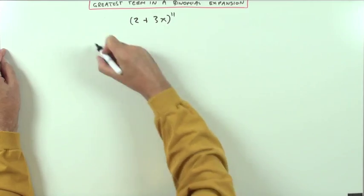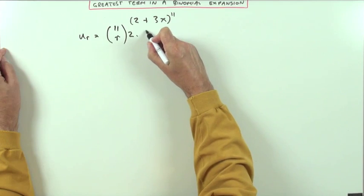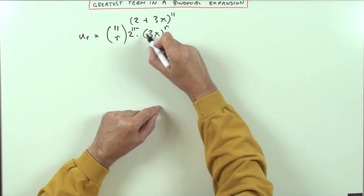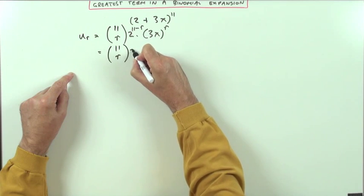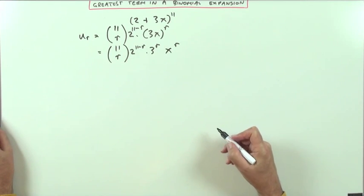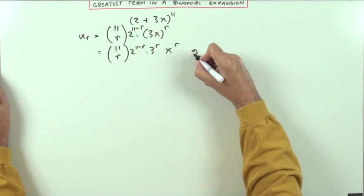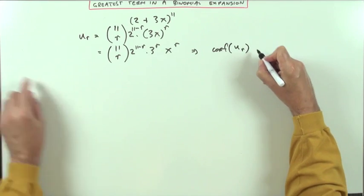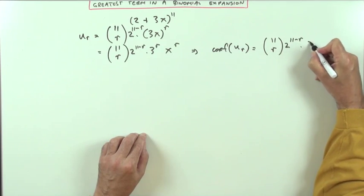We'll identify the terms. The general term would be C(11,r), with the first part 2 to the power (11 minus r) and the second part 3x to the power r, since the powers must sum to 11. So that term is going to be C(11,r) · 2^(11-r) · 3^r · x^r. Since it's only the coefficient I want, I'll call the coefficient of u_r just the numerical part: C(11,r) · 2^(11-r) · 3^r.